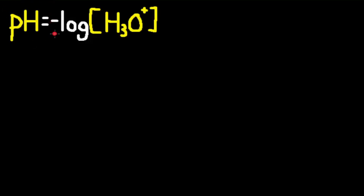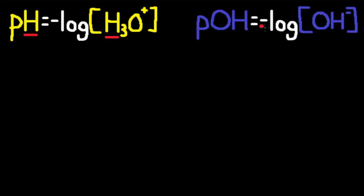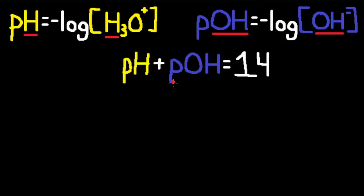pH is equal to the negative log of H3O+. We can remember this because the H in pH goes together with H in H3O+. pOH is equal to the negative log of OH-. The OH in pOH goes together with OH-. And pH plus pOH is equal to 14.